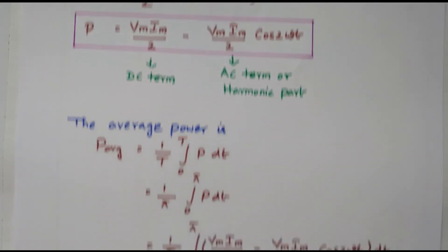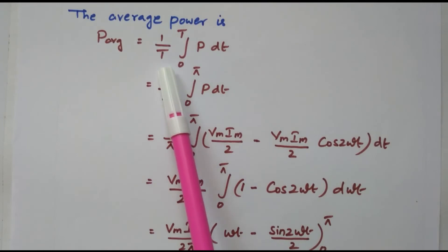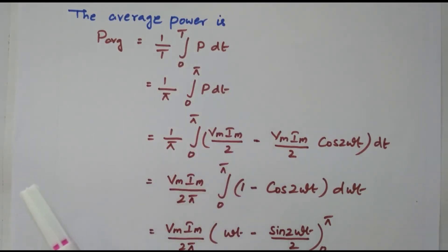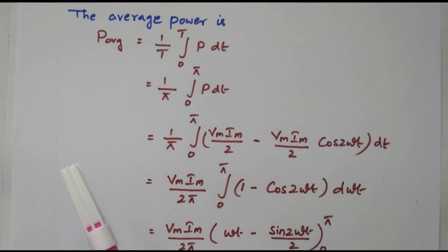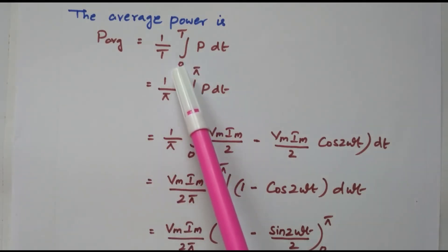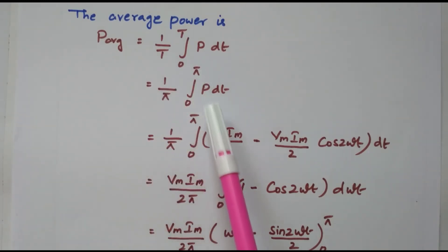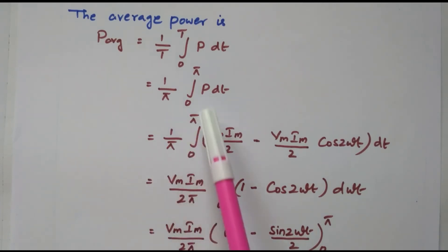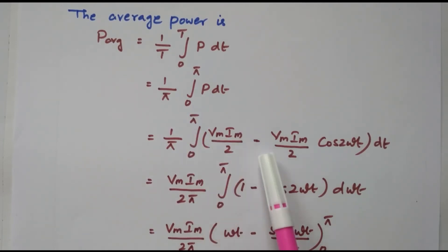Now we derive the average power. The average power equals (1/T) · ∫₀ᵀ P dt. Average means integrating over the entire cycle to get the total average. Using limits 0 to π: P_avg = (1/π) · ∫₀^π P dt. Substituting the instantaneous power: P_avg = (1/π) · ∫₀^π [Vm·Im/2 − (Vm·Im/2) · cos 2ωt] dt. Since Vm·Im/2 appears in both terms, it is factored outside: P_avg = (Vm·Im / 2π) · ∫₀^π (1 − cos 2ωt) dt.